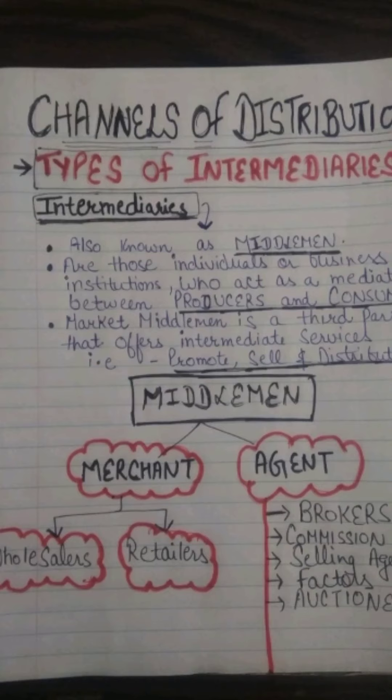In simple terms, intermediaries are those individuals or business institutions who act as a mediator between the producer and the consumer. Going deeper, they are third parties who offer intermediate services — like the promotion of products and services, selling, and distribution. These middlemen are classified as merchant middlemen and agent middlemen. Merchant middlemen are further divided into two categories: wholesalers and retailers.